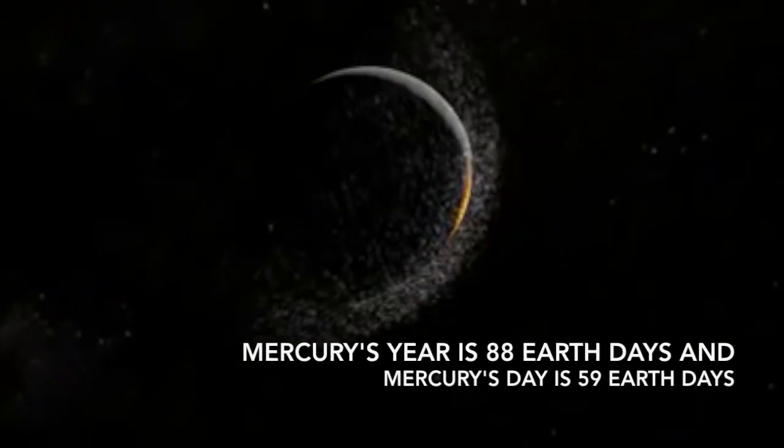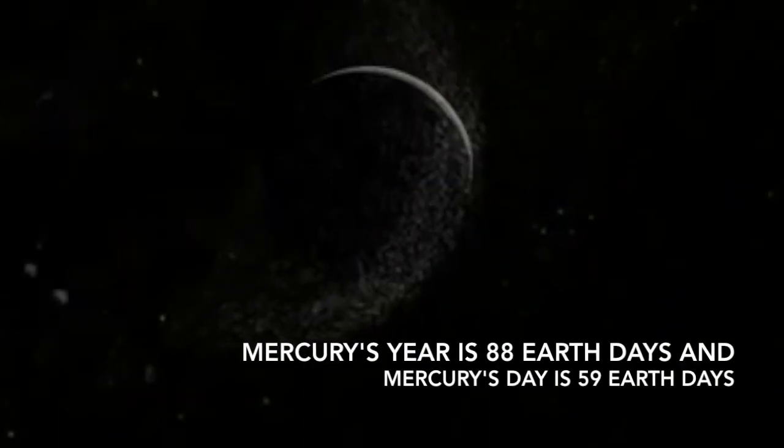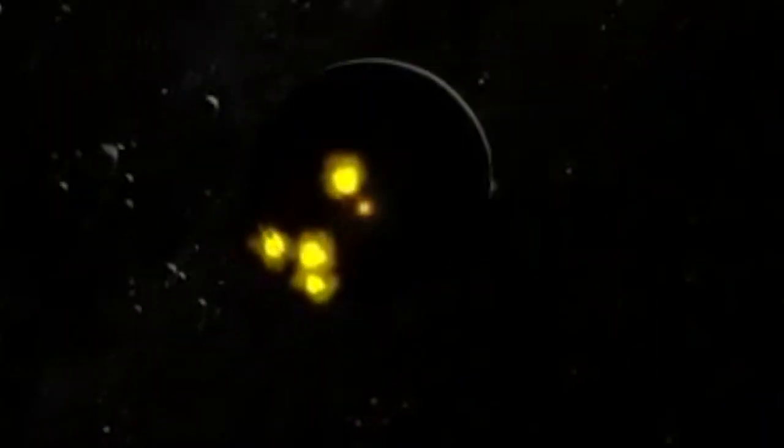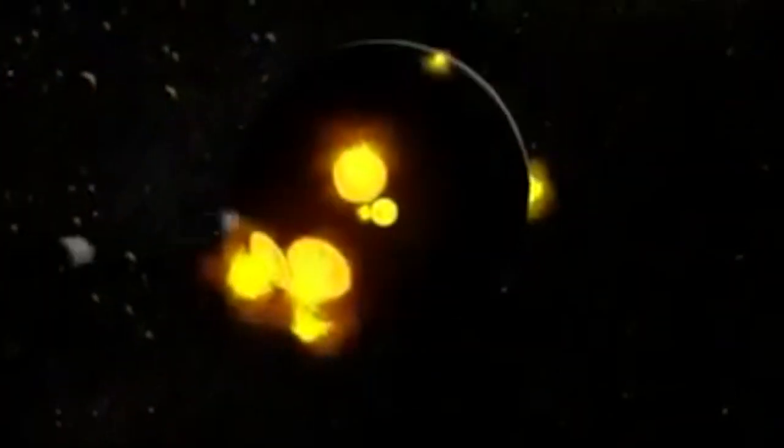Mercury's year is 88 Earth days, and Mercury's day is about 59 Earth days. Once we found this out, we realised that Mercury's day is two thirds of its year. This is no coincidence.